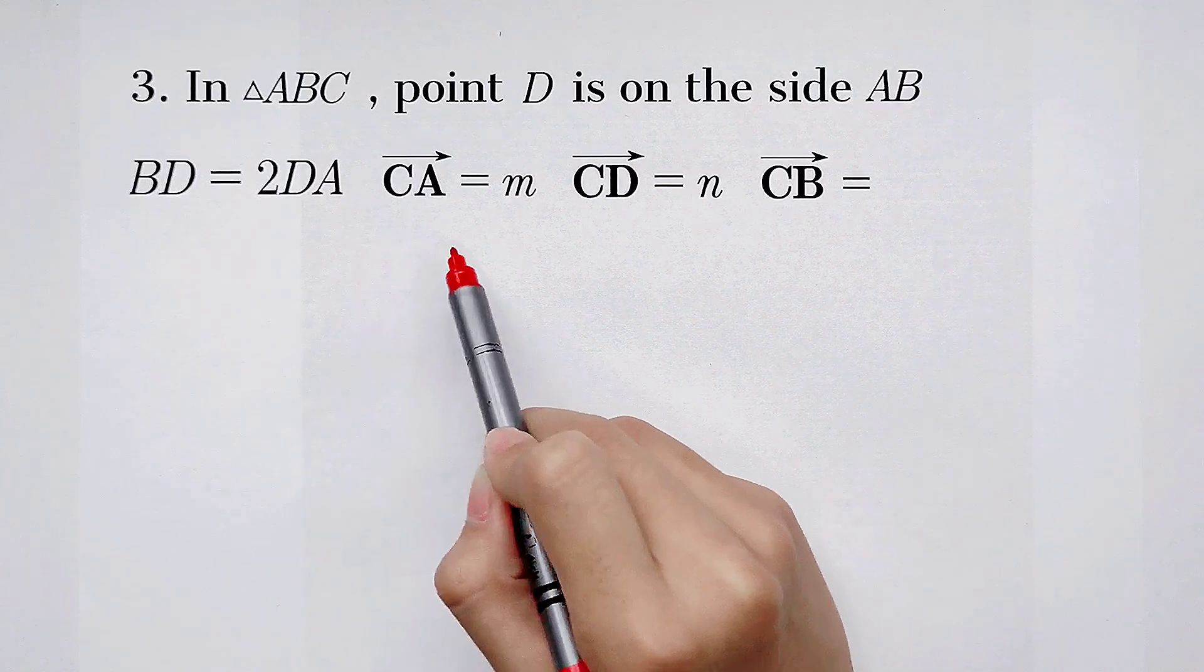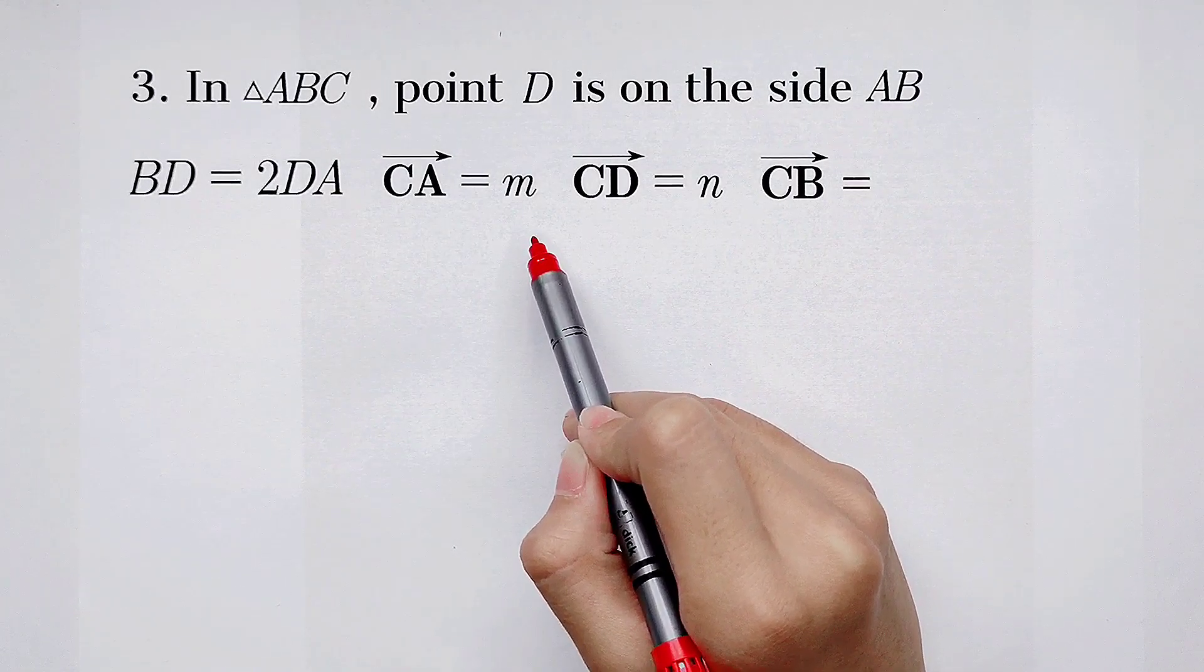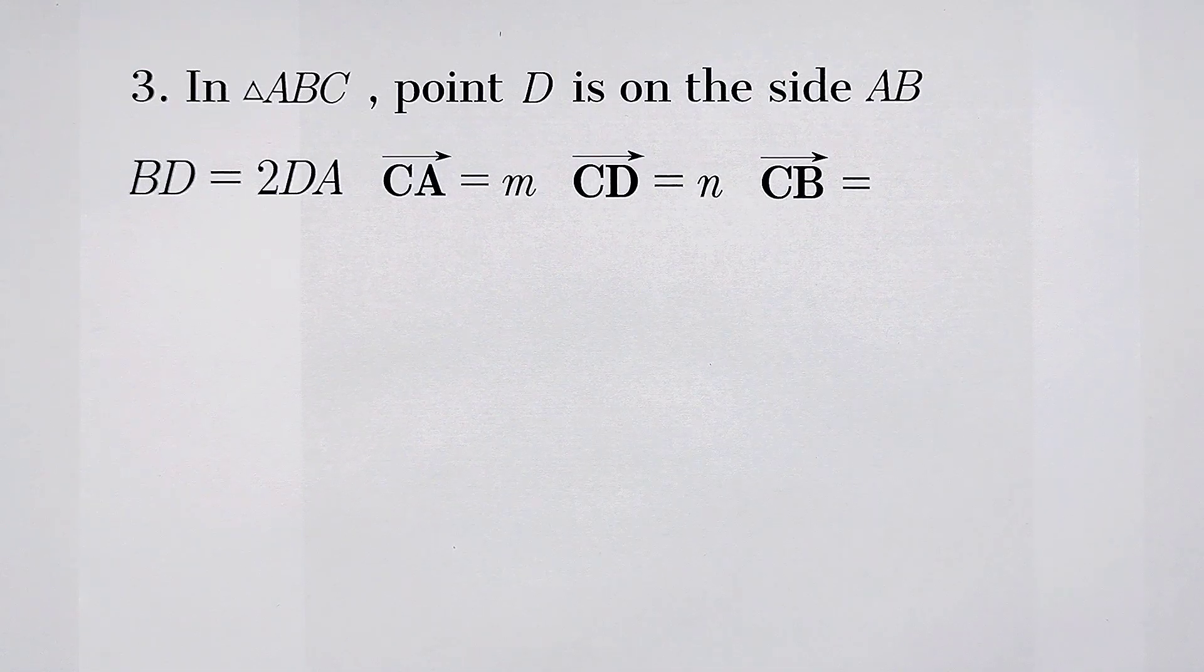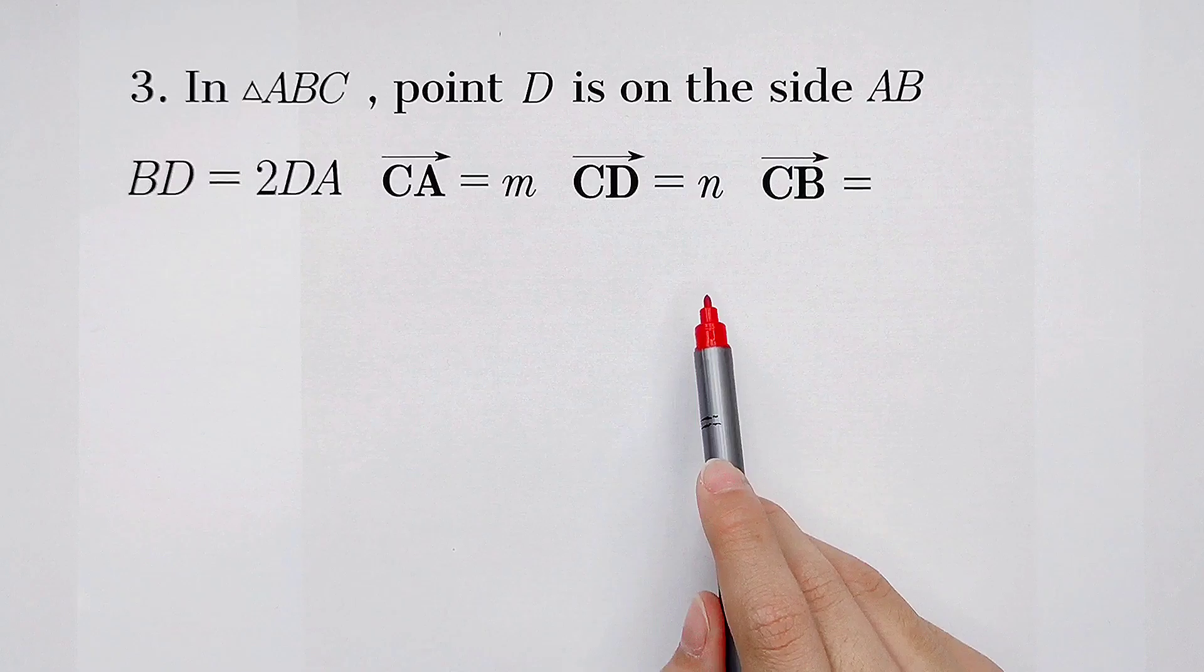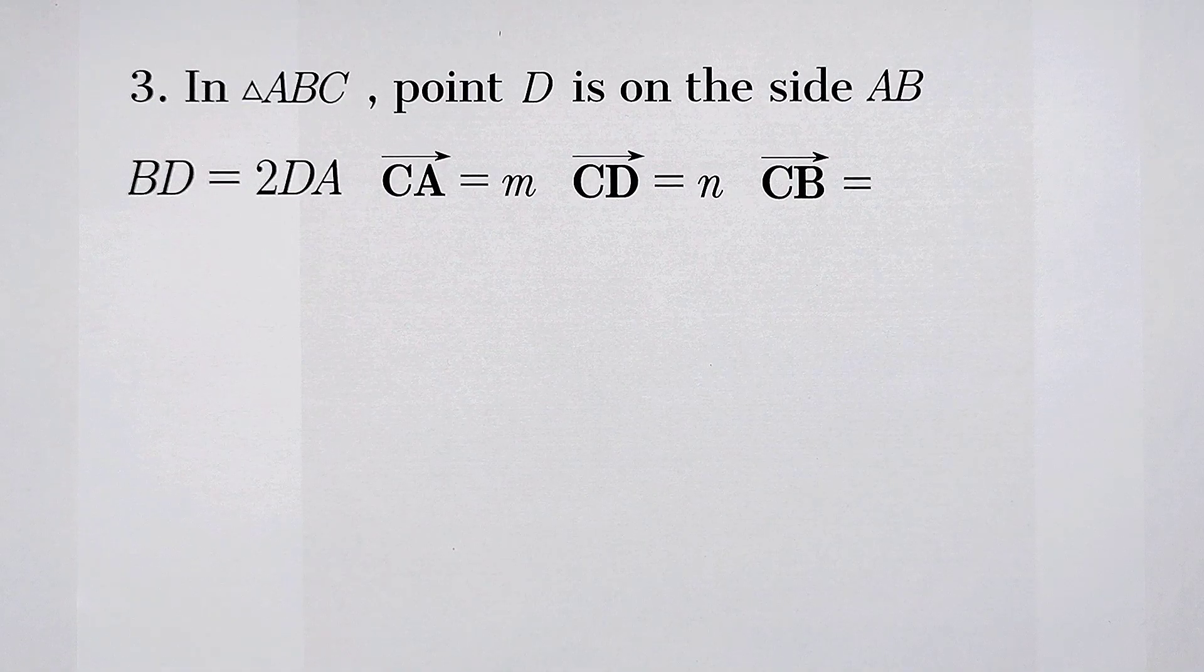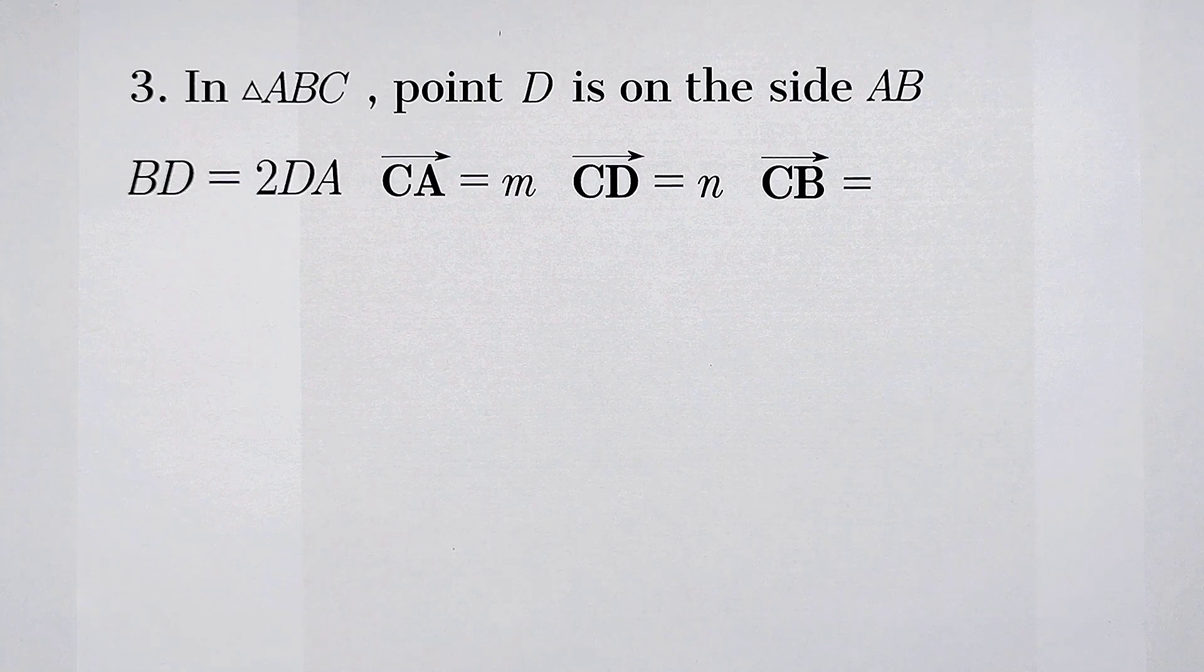The vector CA is equal to M. The vector CD is N. Solve the vector of CB. This is a very common question about vectors. For solving this kind of vector question, we have a common method.